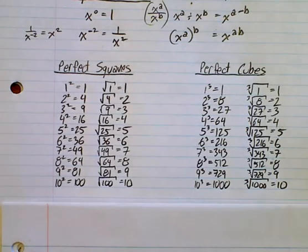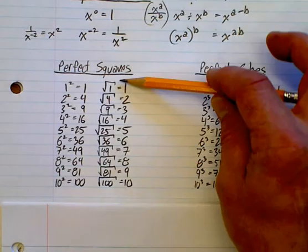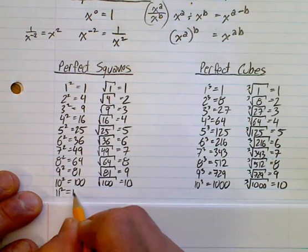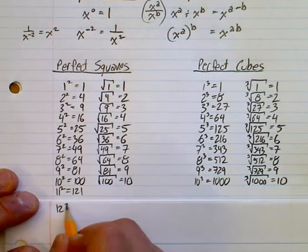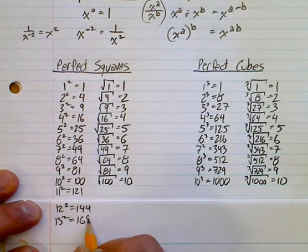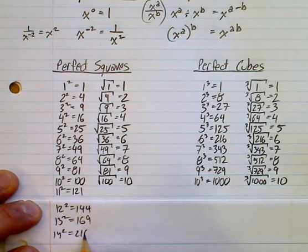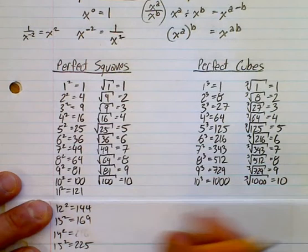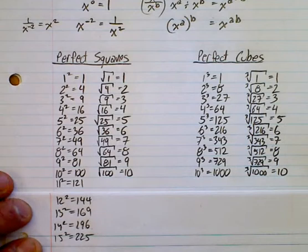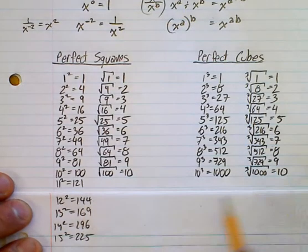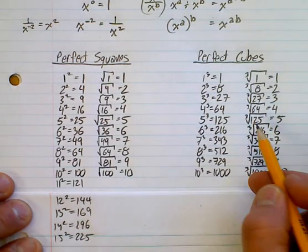Now we need to look at perfect squares and perfect cubes. We're going to be using these to solve equations. The more of these you know off by heart, the better you'll be. You should definitely know most of these. 11 squared is 121, 12 squared is 144, 13 squared is 169, 14 squared is 196, 15 squared is 225.